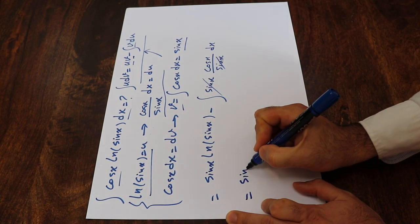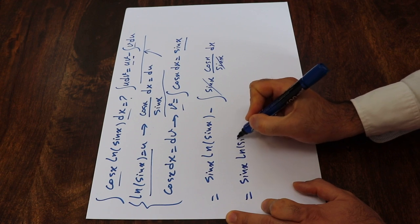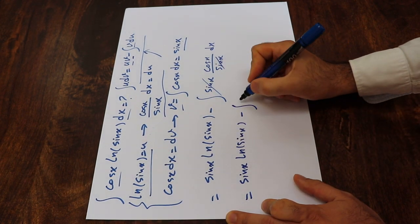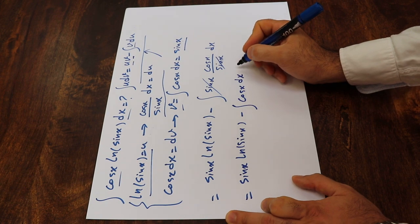Therefore, this will be equal to sine x ln sine x minus integral of cosine x dx.